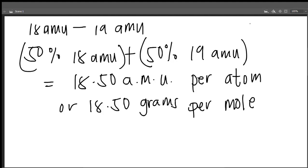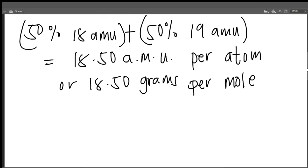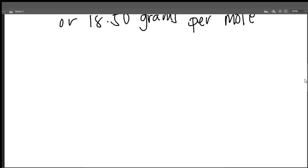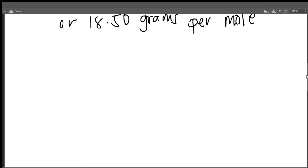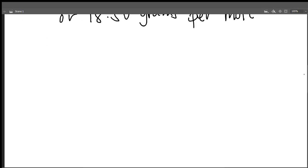Let us have an example of calculation. How do we know how many protons, neutrons, and electrons are in an element? We have the atomic number and the mass number, which is the sum of protons and neutrons.